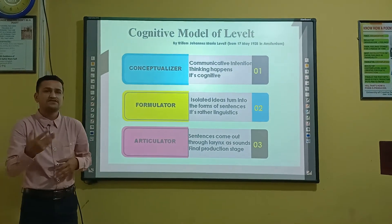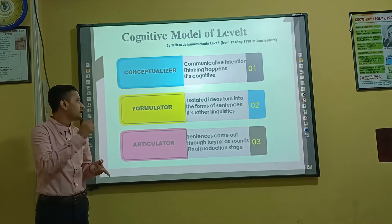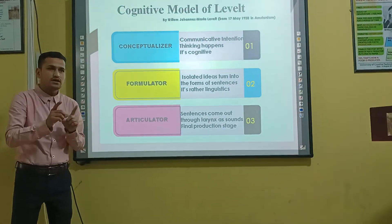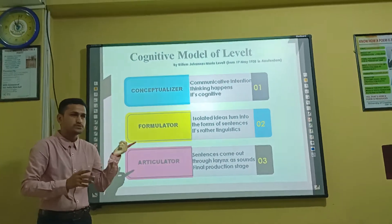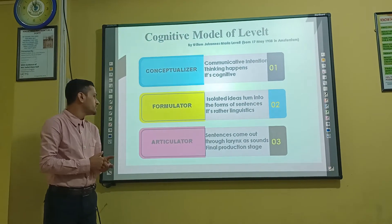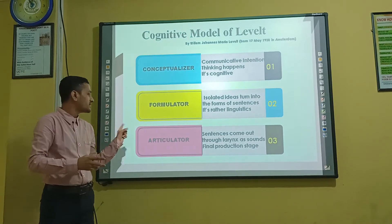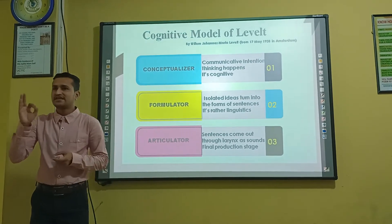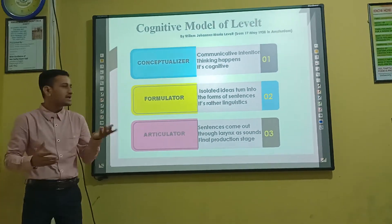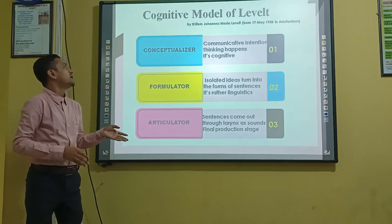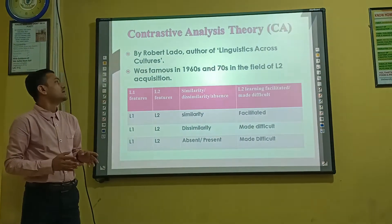First, things happen in the conceptualizer. Then the formulator turns the isolated ideas found in the conceptualizer. And finally, the articulator produces the sentences — in the articulator stage, the sentences come out through our vocal sounds, and finally the sentence is produced. This is the cognitive level. Now I am going to move to the next theory.